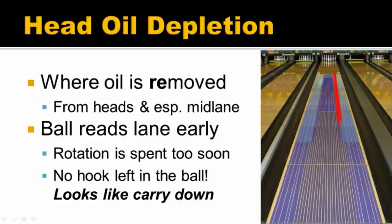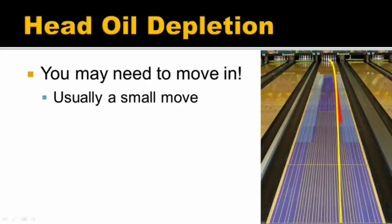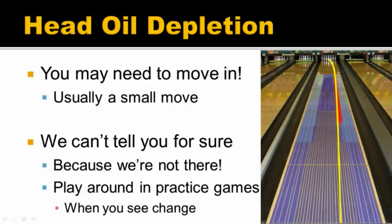And this is a tricky thing because it can look like carry down — it can look like there's oil down the lane when in fact your ball is simply rotating early. It's a little more complicated than carry down to understand, but it's very important to get your head around this concept. Sometimes when you see the ball not finishing at the back, the right move may actually be to move into a little bit more oil so the ball retains its rotation off your release. It's usually a small move, and then the ball can actually turn the corner where you want it to down the back of the lane. IAB recommends you have some practice games — when you see this change, play around with it and see if the move works better moving left or right.